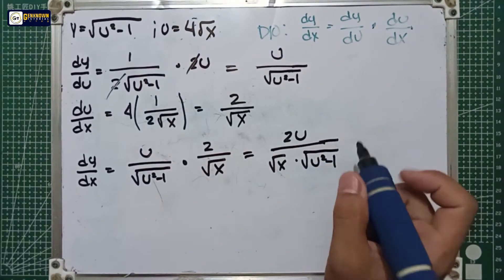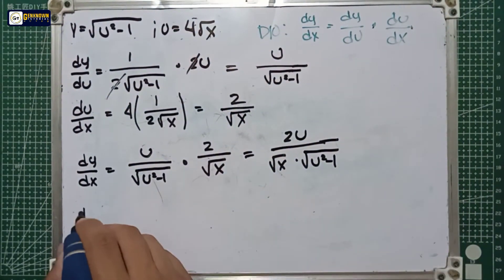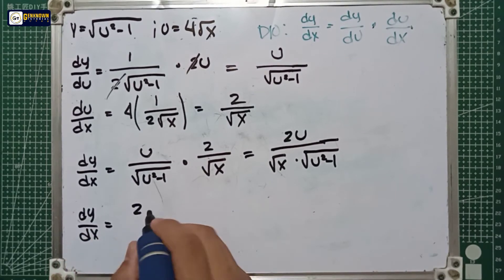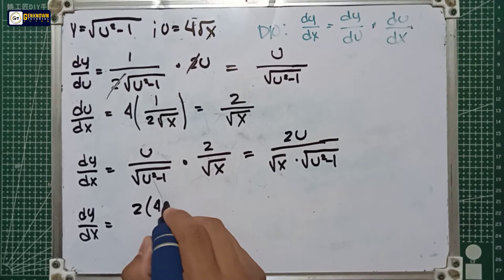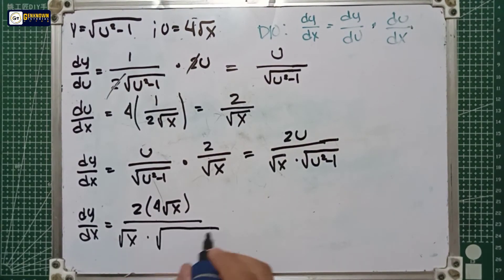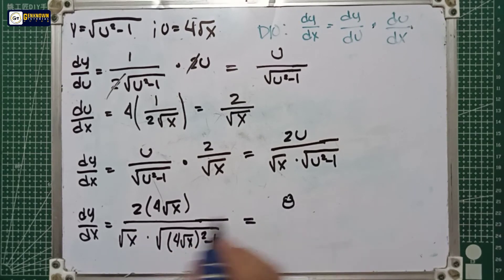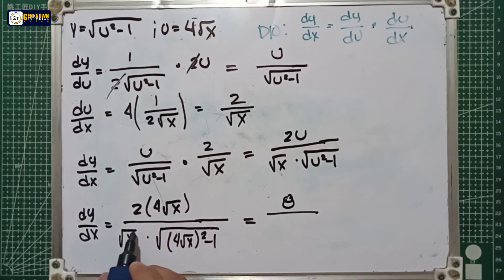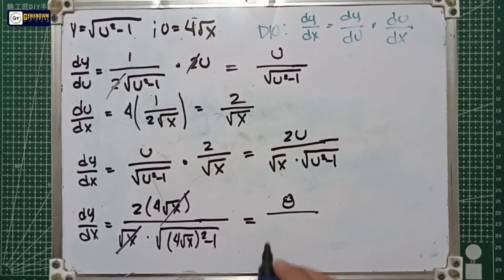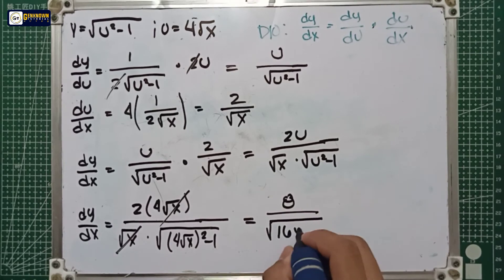The next step is substitution. We substitute the value of u, which is equal to 4 square root of x. So it becomes 2 multiplied by 4 square root of x, all over the square root of x multiplied by the square root of 4 square root of x raised to 2, minus 1. That equals 8 — since 4 multiplied by 2 is 8 — and square root of x over square root of x cancels out to 1. So the result is 8 all over the square root of 16x minus 1.